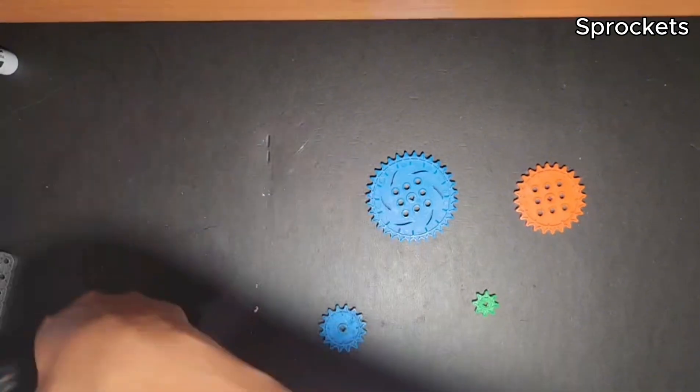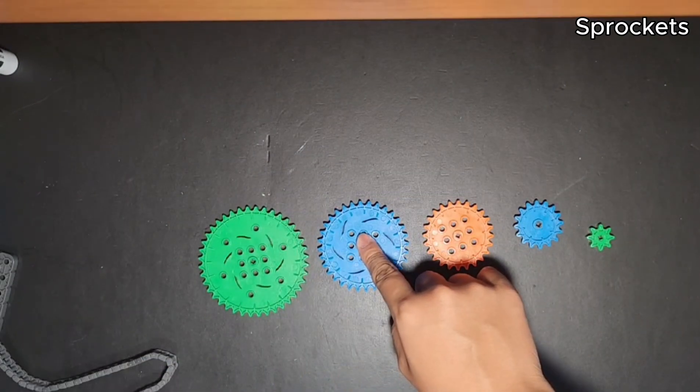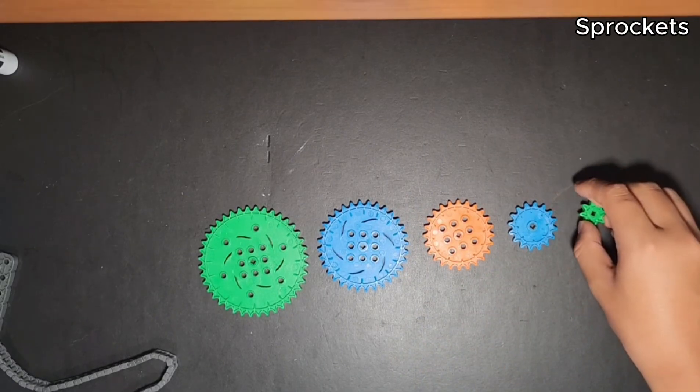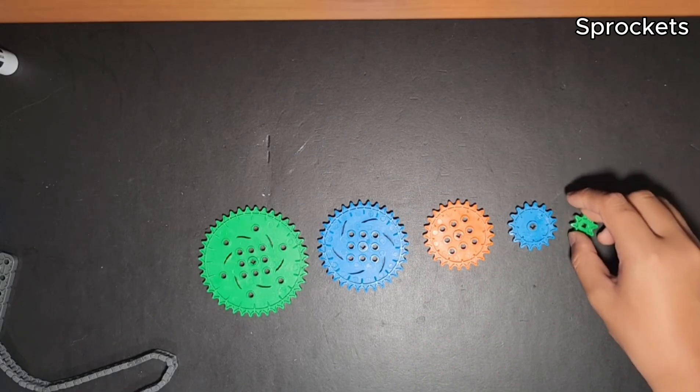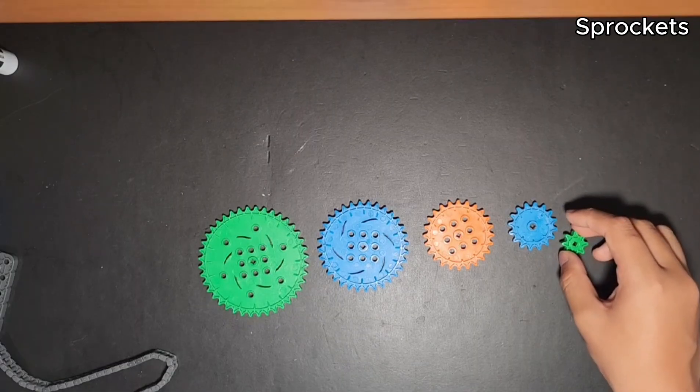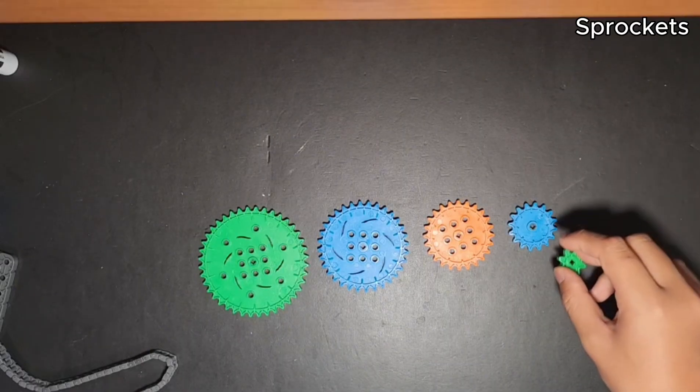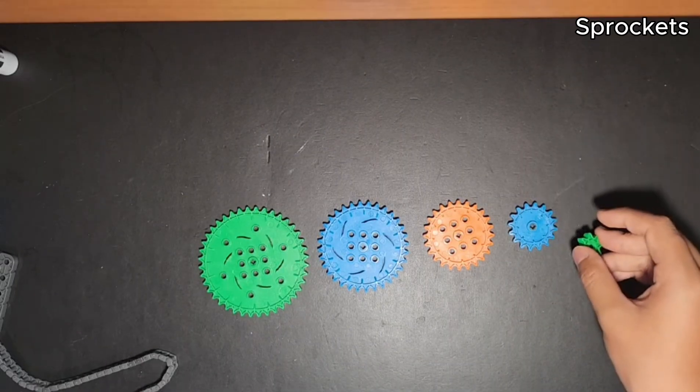And there are five sprocket prototypes. We have 40 tooth, 32 tooth, 24 tooth, 16 tooth, and 8 tooth. And the gear ratio works the same. So if you want it to be faster, you want to have a positive gear ratio. If you want it to be slower, but with more power, you would want a less than one gear ratio.